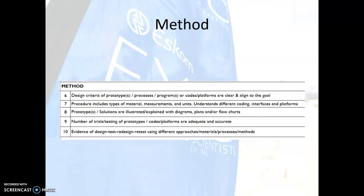In the method section, the word 'prototype' appears on more than one occasion. Prototypes do not apply to computer science projects — they are specific to engineering projects. For item number six, it should read: 'design criteria of programs or codes/platforms are clear and aligned to goals.' Prototypes and processes belong in the engineering section.